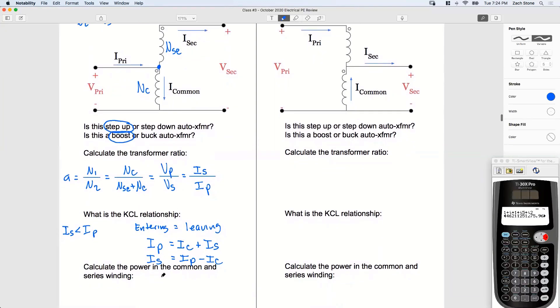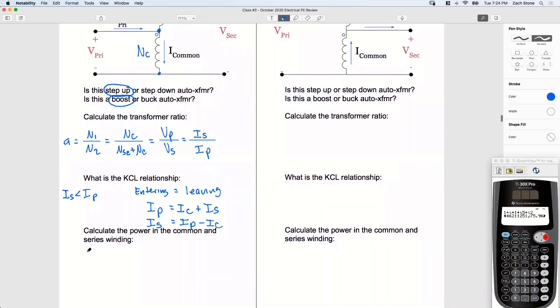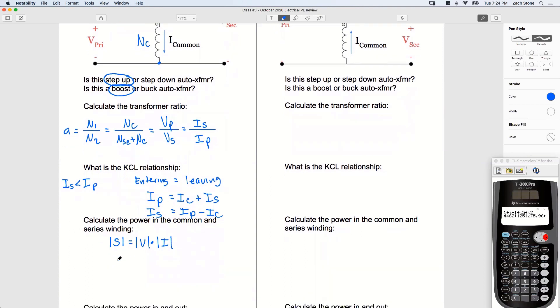All right, calculate the power in the common and series winding. How do we do that? First we're just going to do the common winding. Let's look at the shared node and let's look at this node. If I want to calculate the apparent power of something, apparent power equals what? Magnitude V times magnitude I. These are all magnitudes, by the way. No phase shift is occurring here. So these are all magnitudes.